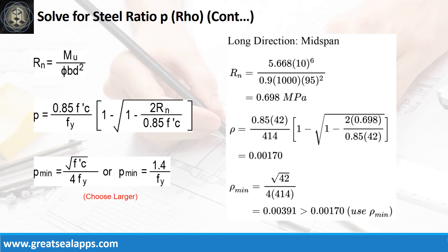Given long direction, mid-span moment equals 5.668 kN·m; resistance factor equals 0.9; B equals 1,000 mm; and D equals 95 mm. The beam design ratio RN equals 0.698 MPa, and reinforcement ratio ρ equals 0.0017. Use ρ minimum of 0.00391.